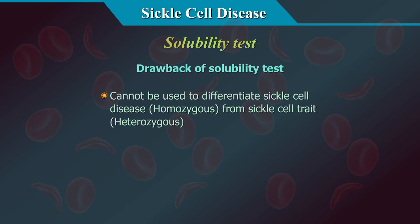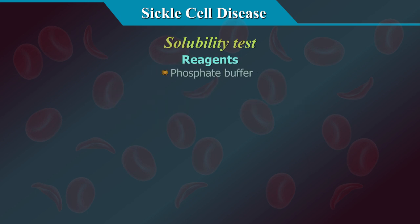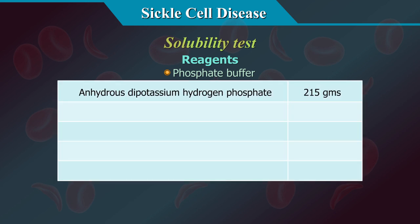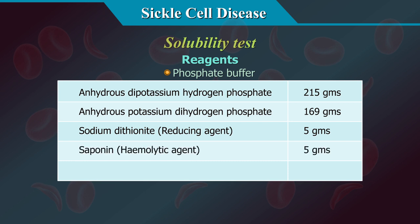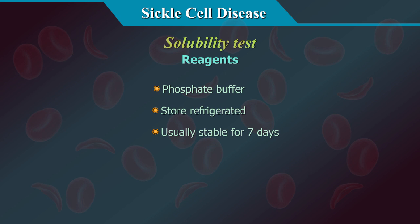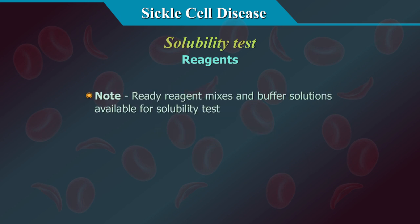The solubility test cannot differentiate sickle cell disease (homozygous for HbS) from sickle cell trait (heterozygous for HbS). Reagents include: anhydrous dipotassium hydrogen phosphate 215 g, anhydrous potassium dihydrogen phosphate 169 g, sodium dithionite (reducing agent) 5 g, saponin (hemolytic agent) 5 g, and water 1 litre. Store refrigerated; stable for a 7-day period.